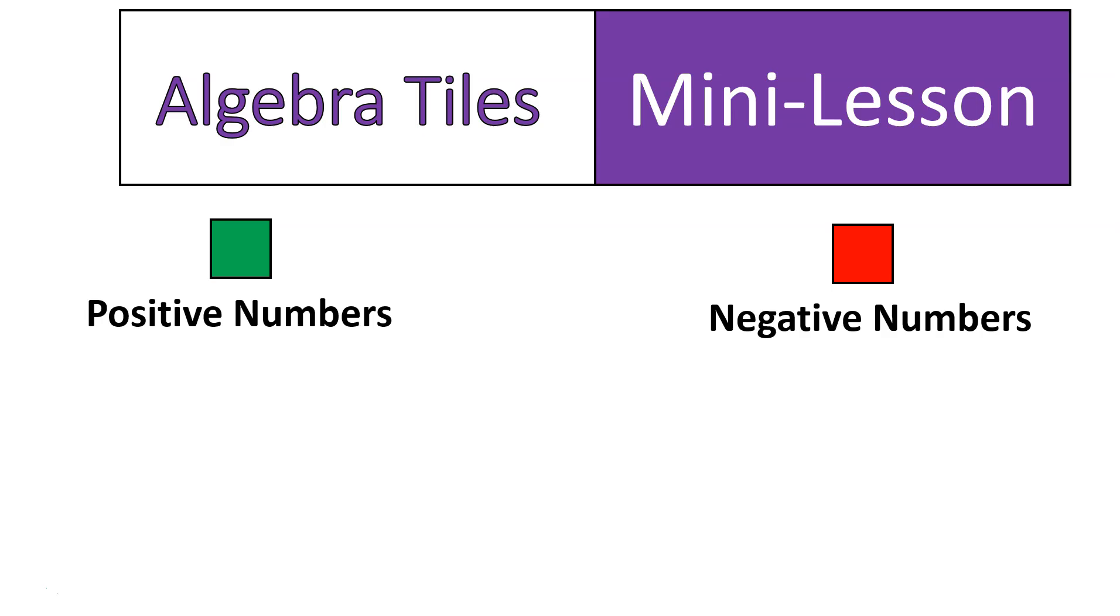I'm going to start with this pretty straightforward question just to set it up and show you how they work. Five minus three. You probably know that five minus three is two. Very good.